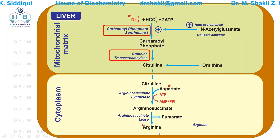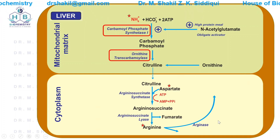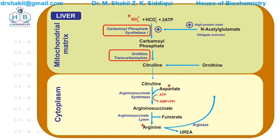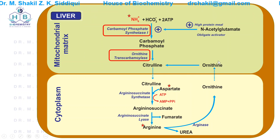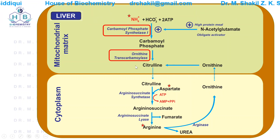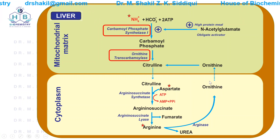Another enzyme, arginase, acts on arginine and splits it into two molecules: urea and ornithine. This ornithine goes back into the mitochondria to participate again in the urea cycle, combining with carbamoyl phosphate to form citrulline, which then re-enters the cytoplasm, and the cycle continues.